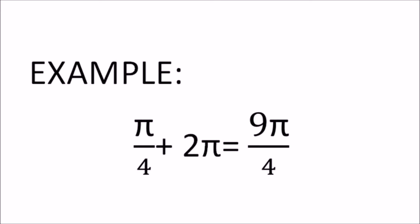If the positive angle is measured in radians, add the given angle to 2 pi. In this example, pi over 4 is added to 2 pi to get 9 pi over 4.